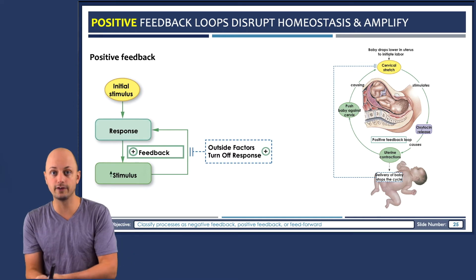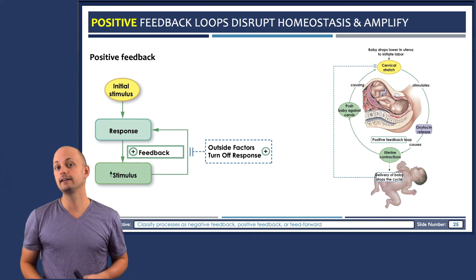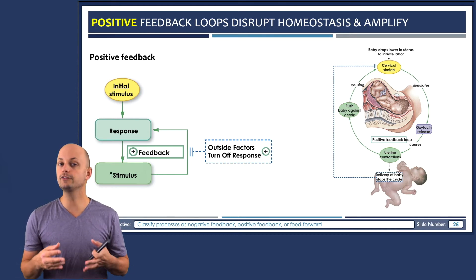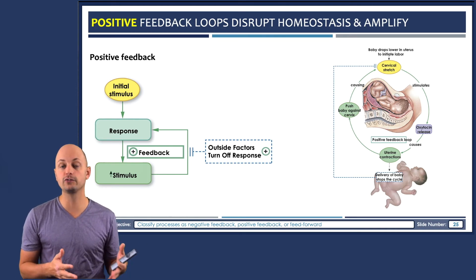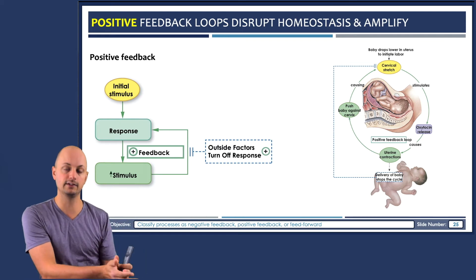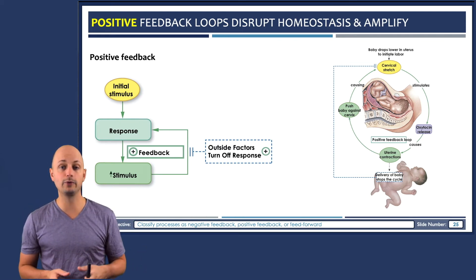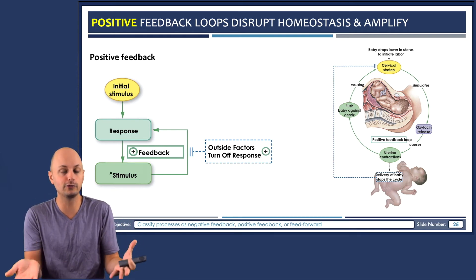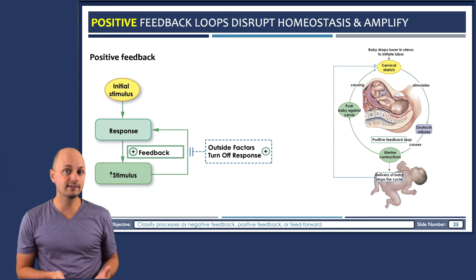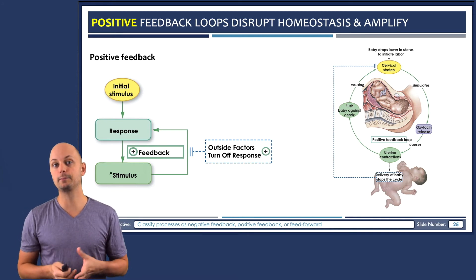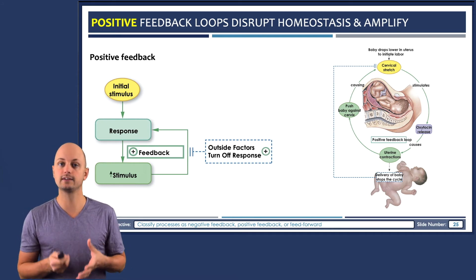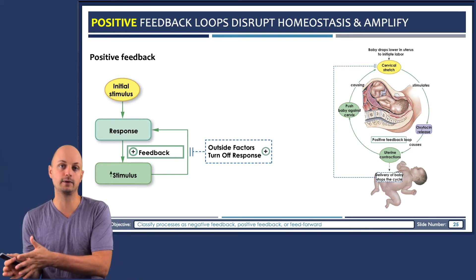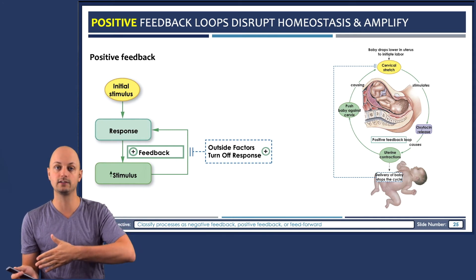So you see where we're going with this — it's an amplification type of effect; the response amplifies the stimulus. Because positive feedback loops are very disruptive to homeostasis, they often require some kind of external factor from outside of the system to turn them off. In this example, the outside factor is the baby getting delivered and removed from the birth canal. Both positive and negative feedback loops take place in what's known as a closed system, which means there's a relationship between the stimulus and the response that either increases it or decreases it.